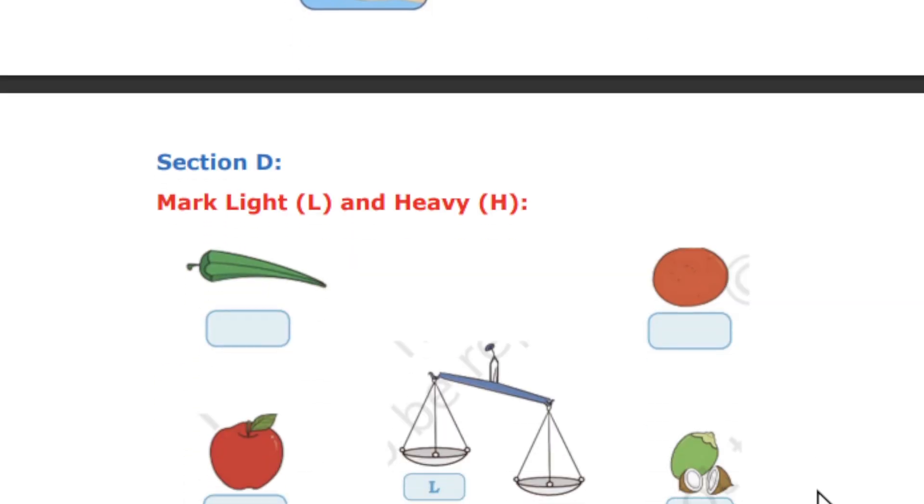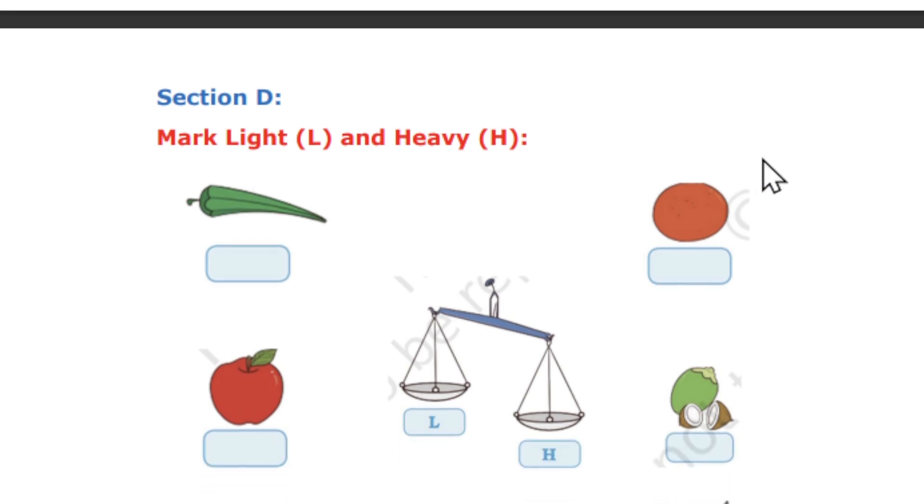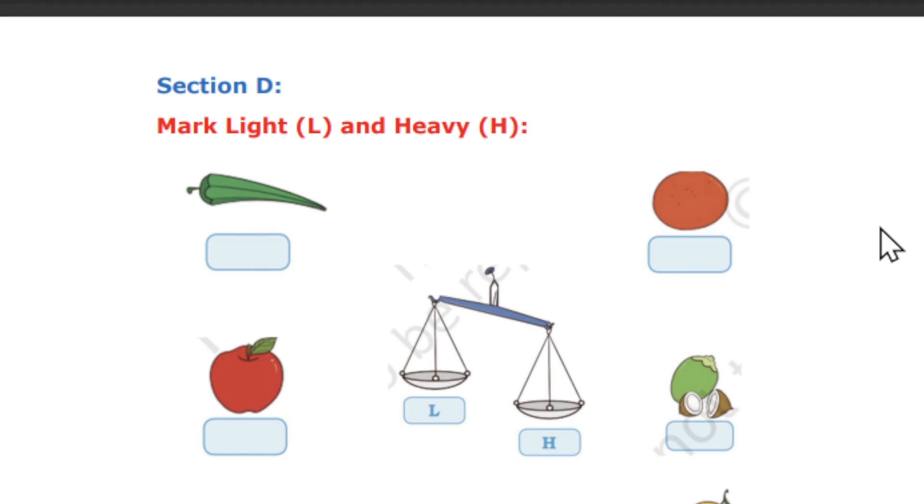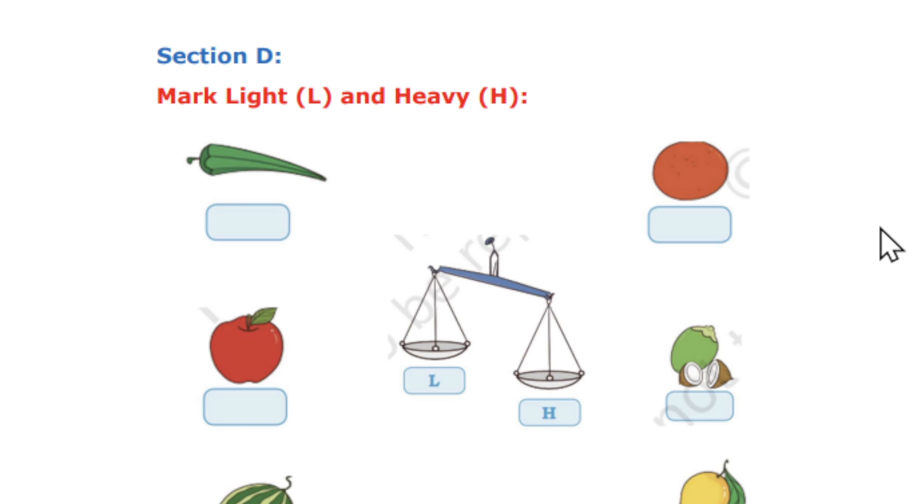So the next session is Section D. So mark L for light and H for heavy. So you need to compare and give the answer.